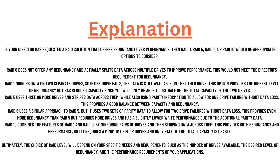RAID 1 mirrors data on two separate drives. If one fails, the data is still available on the other drive. This option provides redundancy but has reduced capacity since you are only able to use half of the total capacity of the two drives.